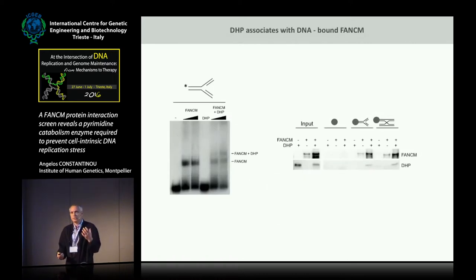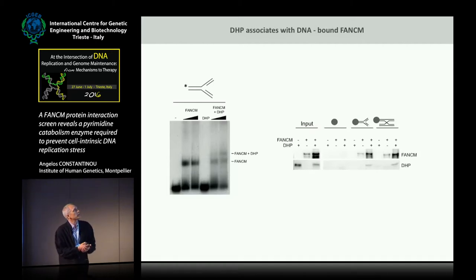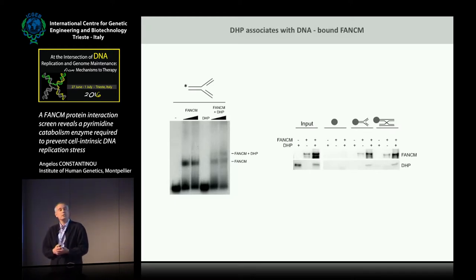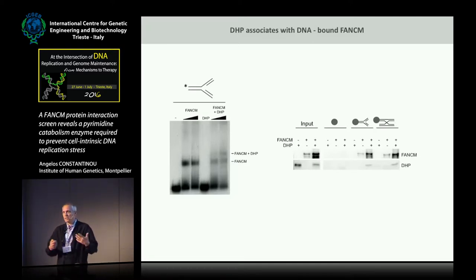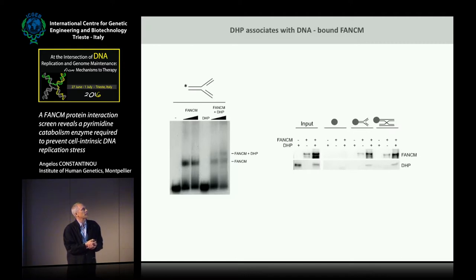Consistent with this, we found that DHP can associate with FANCM when FANCM is bound to DNA. We had shown previously that FANCM binds branch DNA molecules, demonstrable by gel retardation. Using a synthetic replication fork labeled at the 5' end, we purified FANCM and DHP from insect cells and incubated them with the substrate. Upon incubation with FANCM, you have formation of a FANCM-DNA complex of retarded mobility. DHP alone has no affinity for this structure, but when both proteins are co-incubated, a second band of further retarded mobility appears, corresponding to FANCM-DHP-DNA complexes.